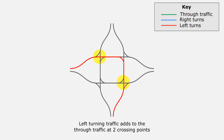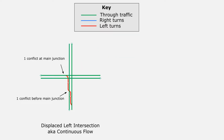So what can we do to stop the left turns from adding extra volume at these two crossings? There are two alternative intersections that can deal with the left turns separately from the through traffic. The first and most well known is the displaced left, or continuous flow, which moves one of the left turn conflicts to before the main junction and then deals with the other conflicts alongside the traffic lights at the main junction.